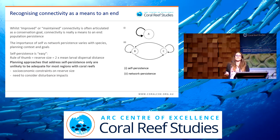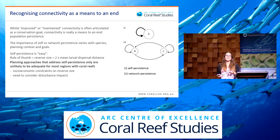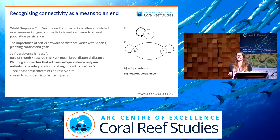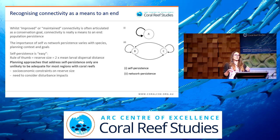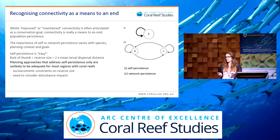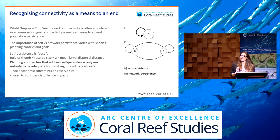The first conceptual challenge is that we need to recognize that connectivity is really a means to an end. I've read loads of conservation plans which articulate a goal to improve or maintain connectivity in a system, but what we're really trying to achieve is to improve the likelihood that populations will persist within reserves. The ultimate goal of conservation planning is not to just represent things within protected areas, but to ensure that they persist there into the future. From a larval dispersal perspective, there are a couple of different ways by which we might achieve persistence.